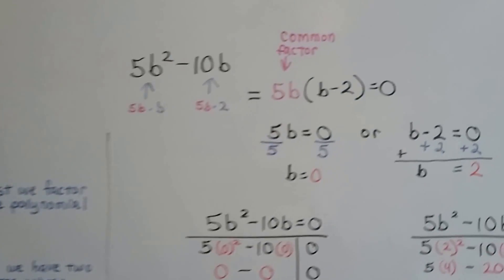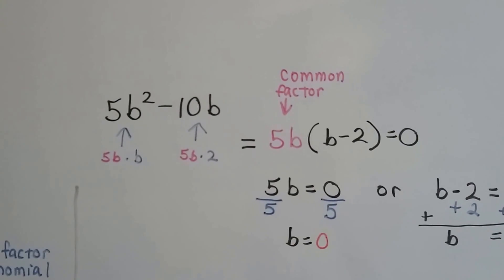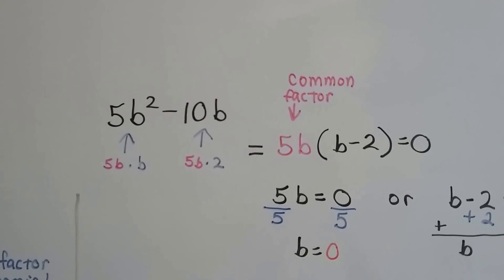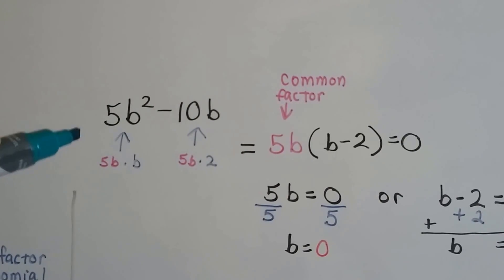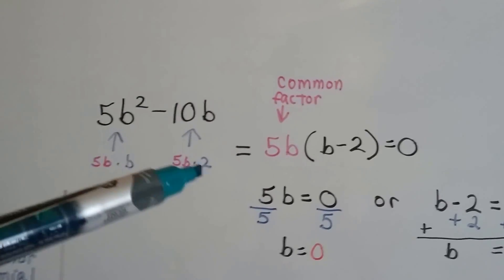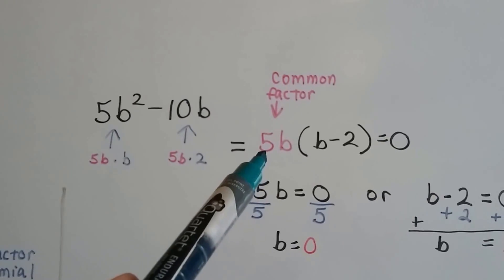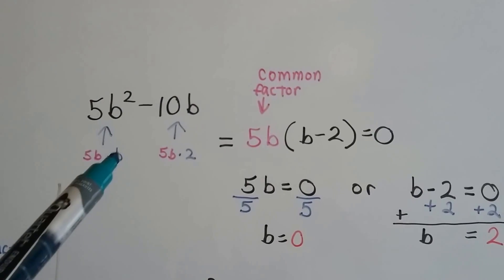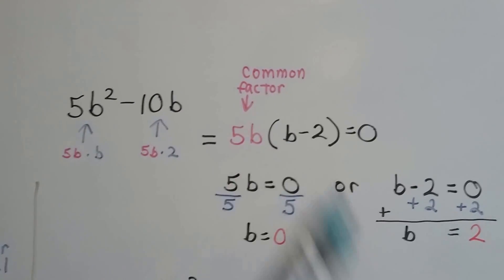Now look at this one. We've got 5b² - 10b. Well, they've got a common factor of 5b that we can factor out, don't they? This has got 5b times b to get that, and this has got 5b times 2. We put him on the front of the parentheses, and that leaves us b - 2 in the parentheses.